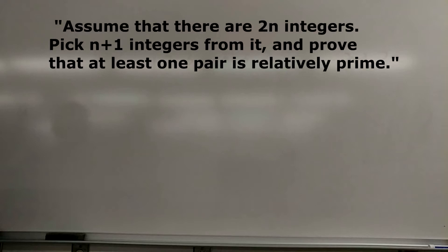Assume that there are two N positive integers, pick N plus one integers from it. Prove that at least one pair is relatively prime.